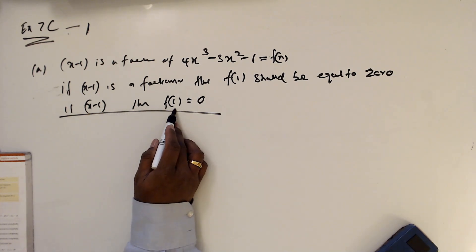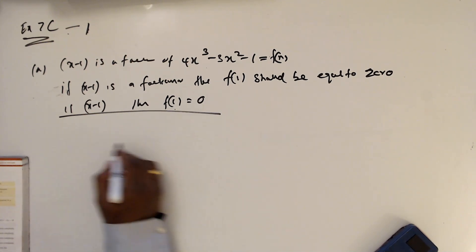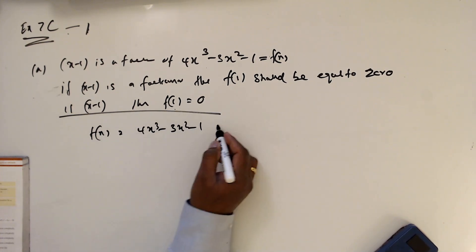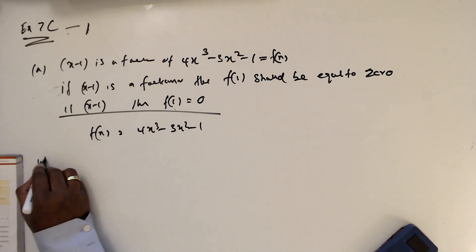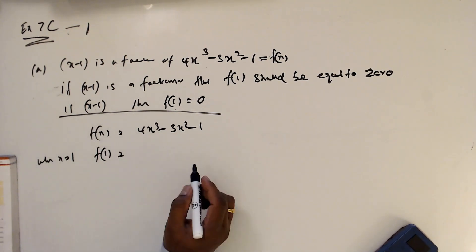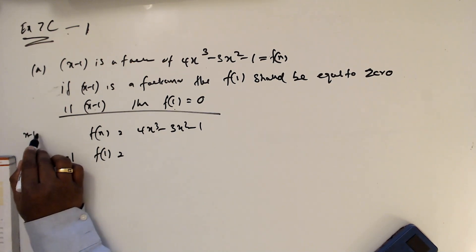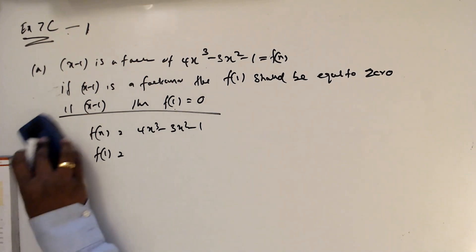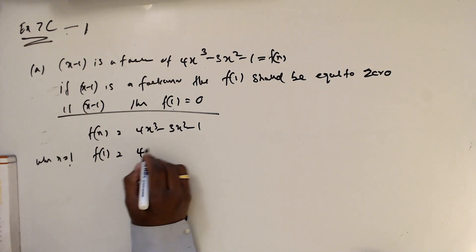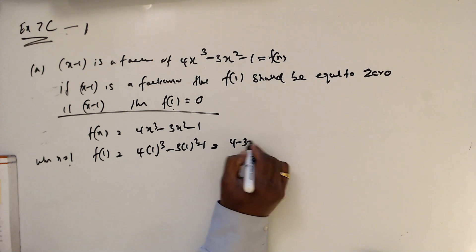So when we find f(1), we substitute x equal 1 here and it will make it equal to zero. So with f(x) = 4x³ minus 3x² minus 1, if x minus 1 is a factor, we set x minus 1 equal to zero, giving x equal 1. That's how we take x equal 1. So f(1) = 4(1)³ minus 3(1)² minus 1.